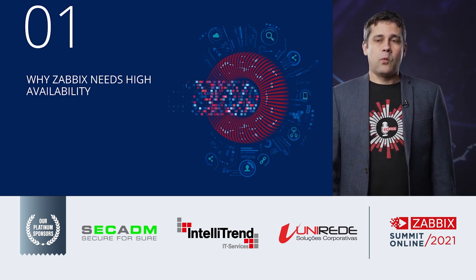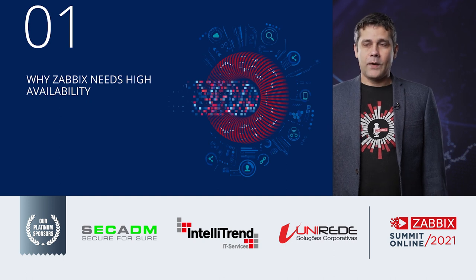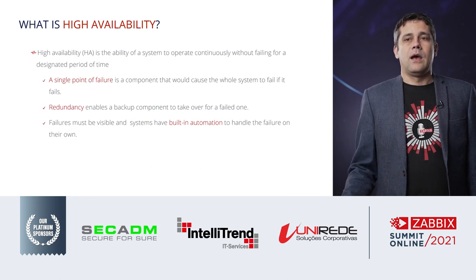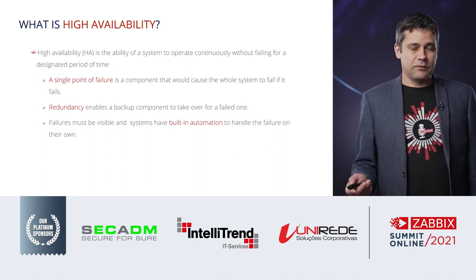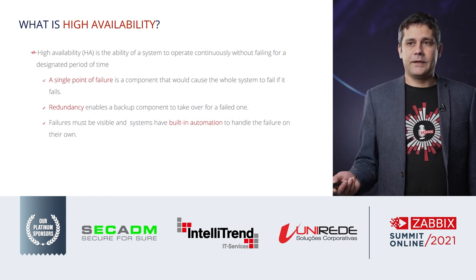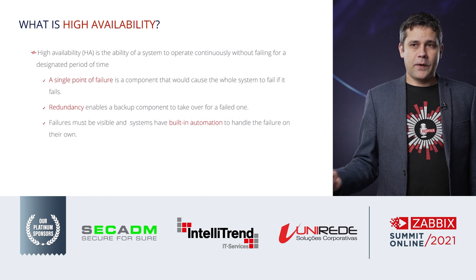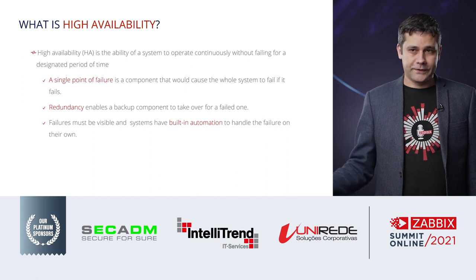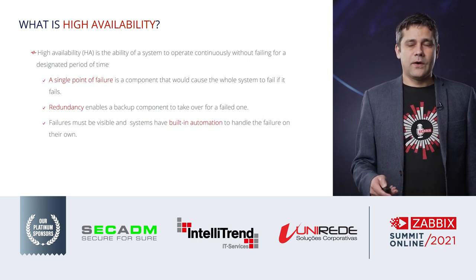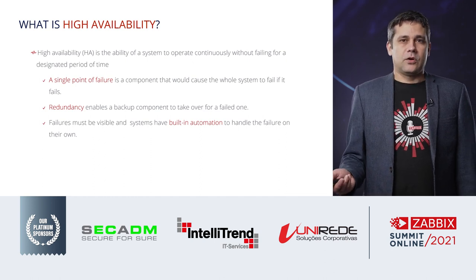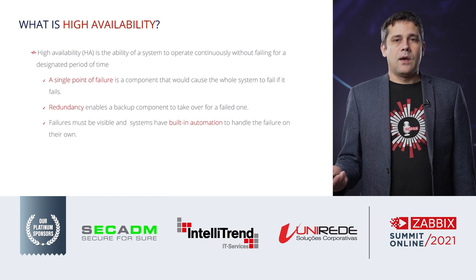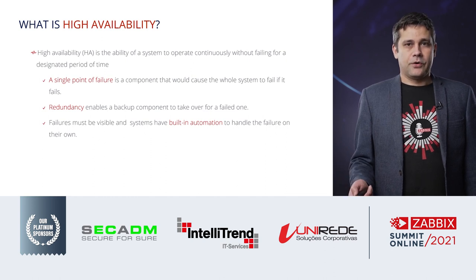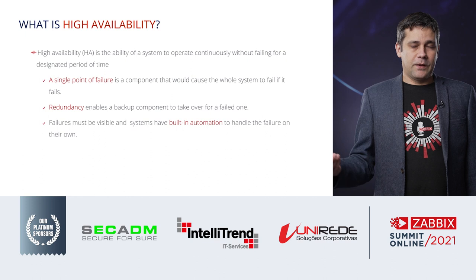Let's start with why Zabbix needs high availability. The main point of high availability is you must not have a single point of failure. A single point of failure is any component which may fail and after that your system will no longer function. You need to avoid that, and you need to have some kind of redundancy, which means your components will take over when some of them fail. Your failures, if they happen, must be visible.